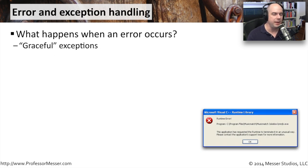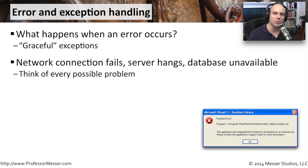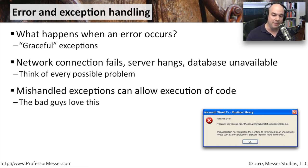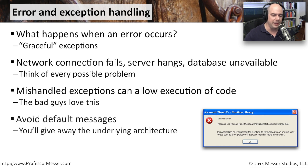Another important consideration when coding is making sure that we have certain routines in place should an error occur. We can't possibly plan for everything, and we should always have a generic message that appears when a problem happens — a graceful process, not just a standard error that pops up from the compiler or script language. For example, there are mishandled exceptions like one shown here where you see a generic Microsoft Visual C++ runtime library error. Now I know what application and coding system was used, and I may be able to take advantage of that. You want to get rid of any default messages and make it something generic so that the bad guys cannot understand what the underlying architecture might be.